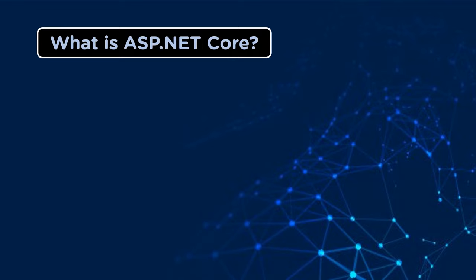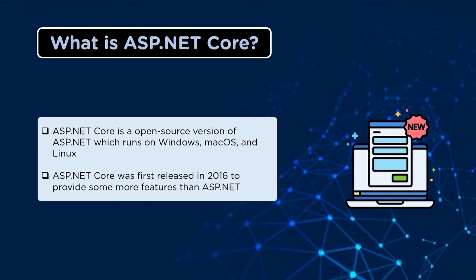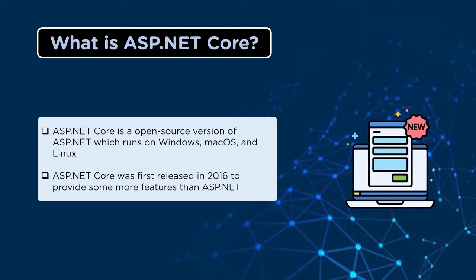ASP.NET Core is an open-source version of ASP.NET with some additional features compared to ASP.NET. It runs on three different platforms: Windows, Linux, and macOS. The first version of ASP.NET Core was released in 2016 to provide better features than ASP.NET.